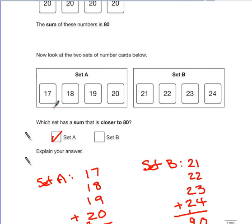Another way you could do this is to look at the difference away from 20 that each of these numbers are. That one's 3 away. That's 2, that's 1 and that's nothing. So therefore the difference here is 6. The difference on these ones is 1, 2, 3 and 4. And therefore the difference is 10. Proving that set A is closer.